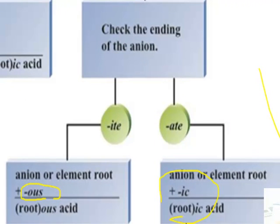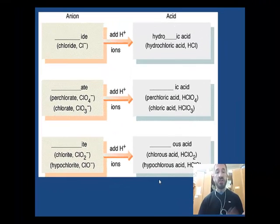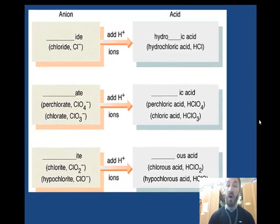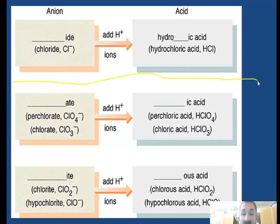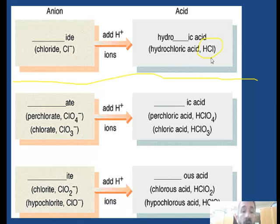Let's look at a chart that shows us the three categories. The top category contains non-oxyacids; the ones below are oxyacids. For example, HCl — the ion is chloride — gets the prefix 'hydro' and the suffix 'ic', making it hydrochloric acid.